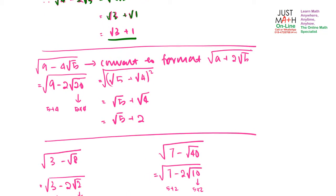As mentioned earlier, all expressions must be converted into the format A plus 2 root B. Here you have a 4 coefficient. Since 4 is 2 times 2, you only want the 2 in front, and this other 2 you put inside — so 2 becomes 2 times 2, and root 4 equals 2. So this 4 goes inside: 5 times 4 gives 20, making it 9 minus 2 root 20.